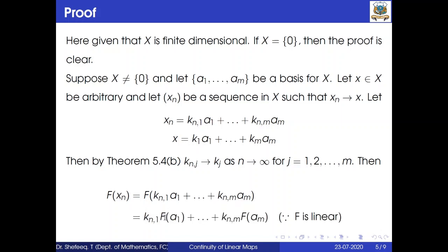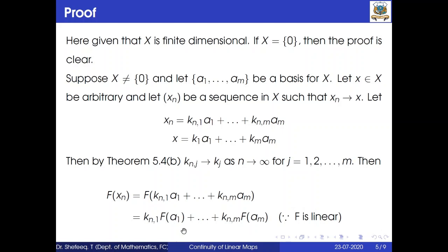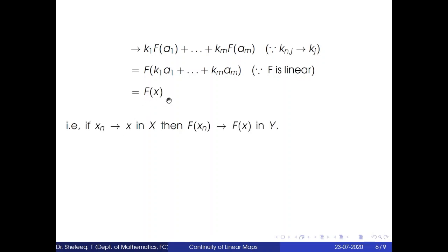By linearity of f, f(xn) = kn1·f(a1) + ... + knm·f(am). Since knj converges to kj as n tends to infinity, this converges to k1·f(a1) + ... + km·f(am). By linearity of f again, this equals f(k1·a1 + ... + km·am) = f(x). Therefore, xn converging to x in X implies f(xn) converges to f(x) in Y.